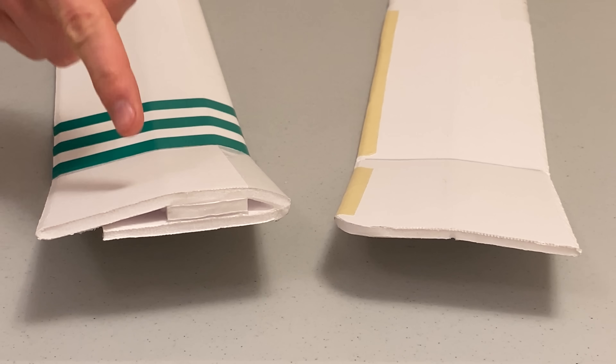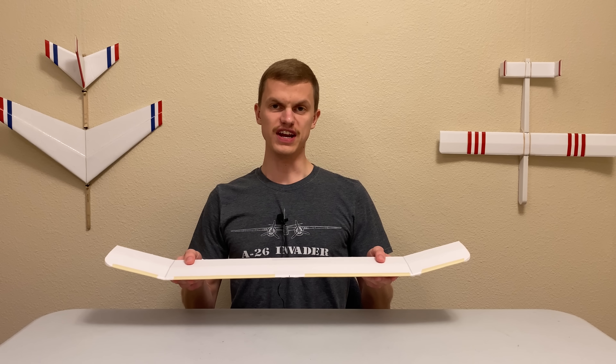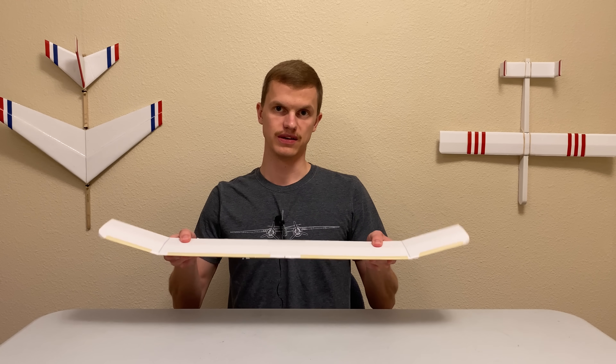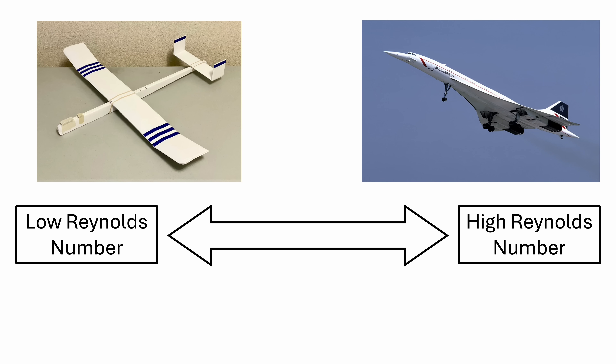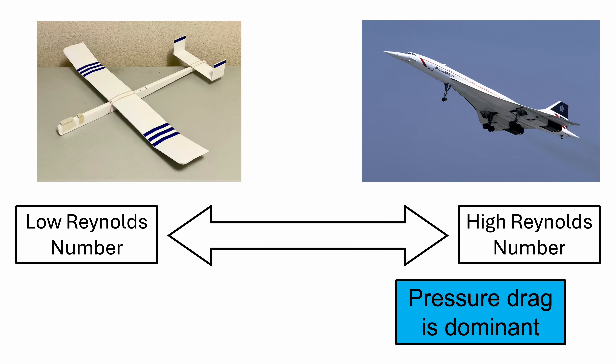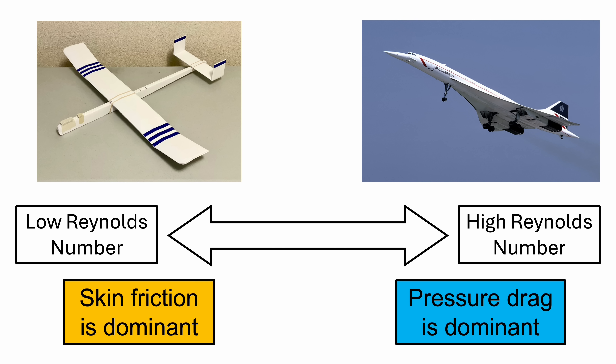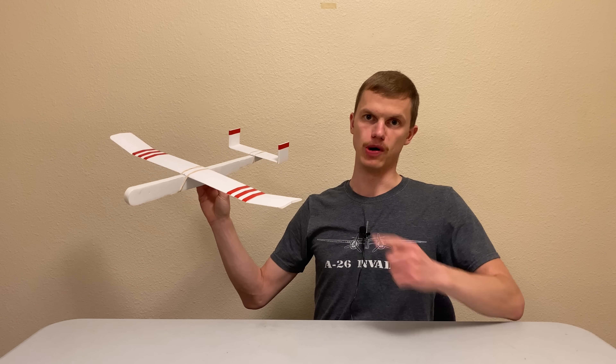One idea is to make our airfoils thinner and more streamlined to reduce pressure drag. Thin airfoils, however, are more flimsy, so this might not always be an option, especially for high aspect ratio designs. If we look at what the Reynolds number actually is, it's a ratio of inertial forces to viscous forces — a comparison between the significance of pressure drag and skin friction. At high Reynolds numbers, pressure drag is dominant. At low Reynolds numbers, however, skin friction drag is dominant, meaning we need to target the skin friction to make our small, slow-flying planes fly further.